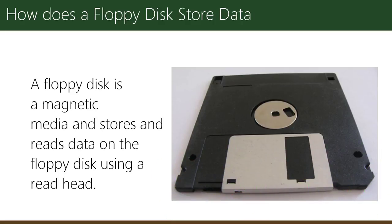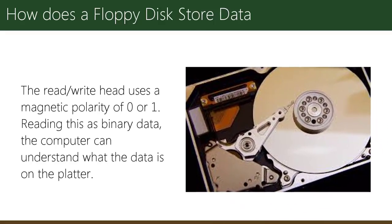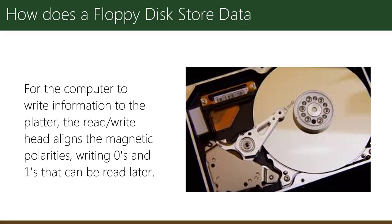The read/write head uses a magnetic polarity of 0 or 1, reading this as binary data so the computer can understand what the data is on the platter. For the computer to write information to the platter, the read/write head aligns the magnetic polarities, writing zeros and ones that can be read later.